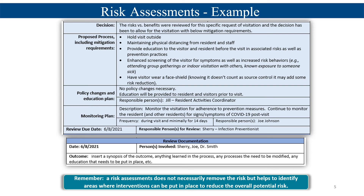Moving down, you have a section for any needs for policy changes, an education plan, what you're going to do, who's responsible, and then the monitoring section — what type of monitoring will take place during or after the action, the frequency, and who is responsible. Then you pick your review date: when are you going to do that fifth step and review the overall process after it has happened, and who is responsible for coordinating that?